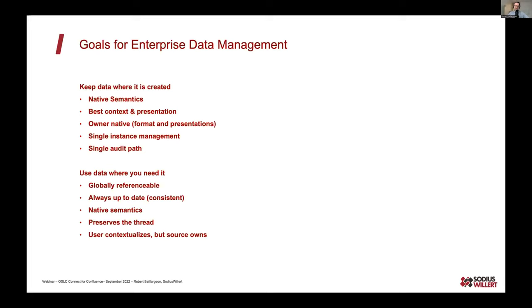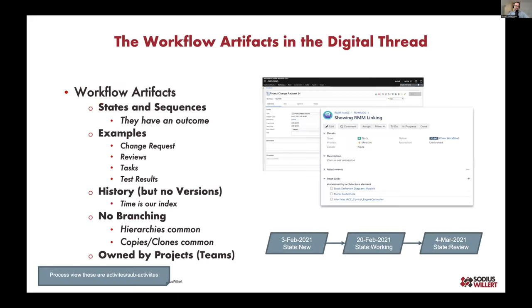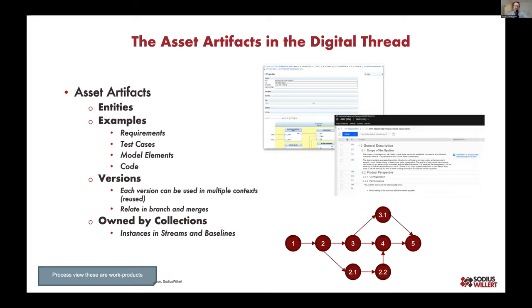We also need the inverse: not only controlling data where we create it, but making it referenceable — accessible from many different places, always up to date, presented consistently in its native format. We want to preserve the thread, meaning I can navigate not just to the first artifact I'm related to but to the next, following the digital thread through. The only way to do that is with linking. When we deal with these artifacts, typically we're working with two types: workflow artifacts, which have history but no version, and versioned assets like requirements and test cases.